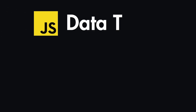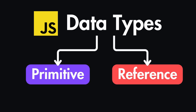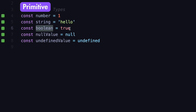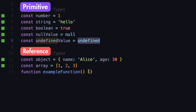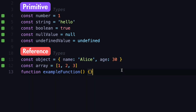In JavaScript, all data types can be classified into two fundamental categories: primitive types and reference types. The primitive types are the ones we already know, like numbers, strings, booleans which are true or false values, the null value, and also undefined values. Apart from these, we also have the reference types, and these are objects, arrays, and also functions.